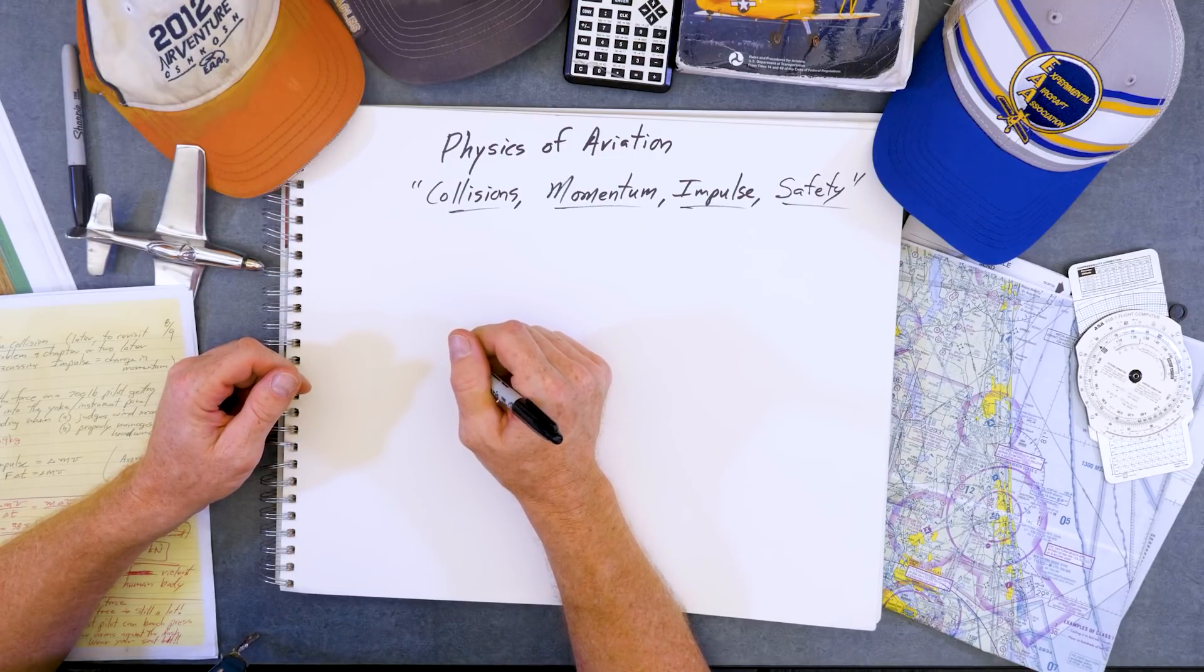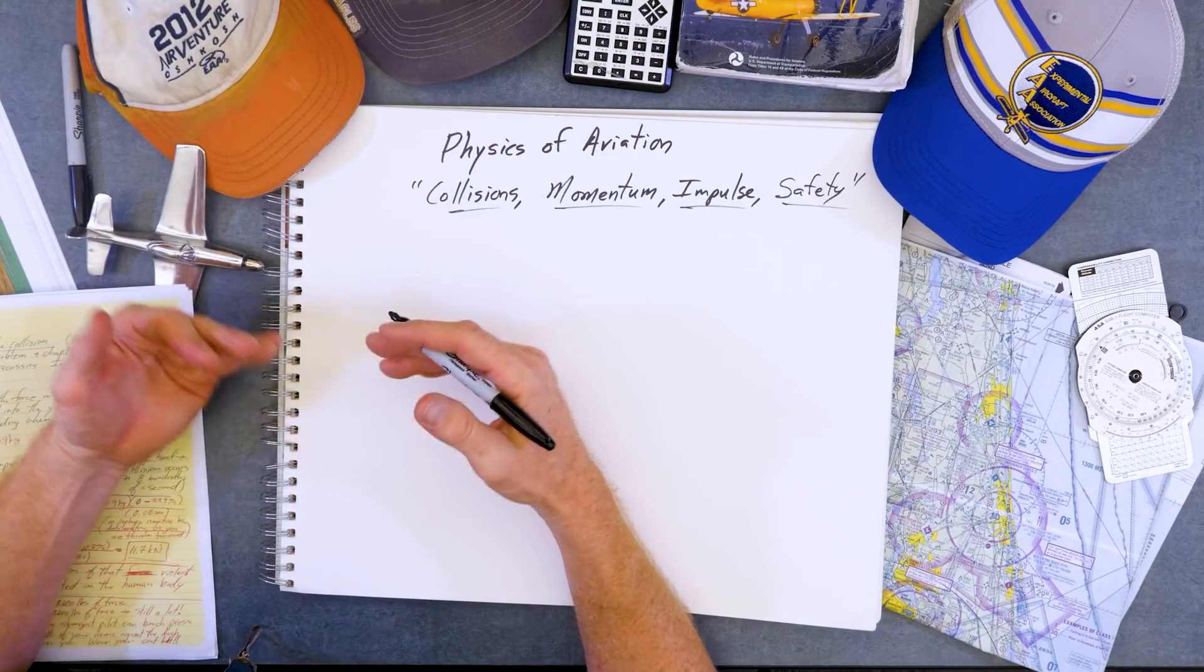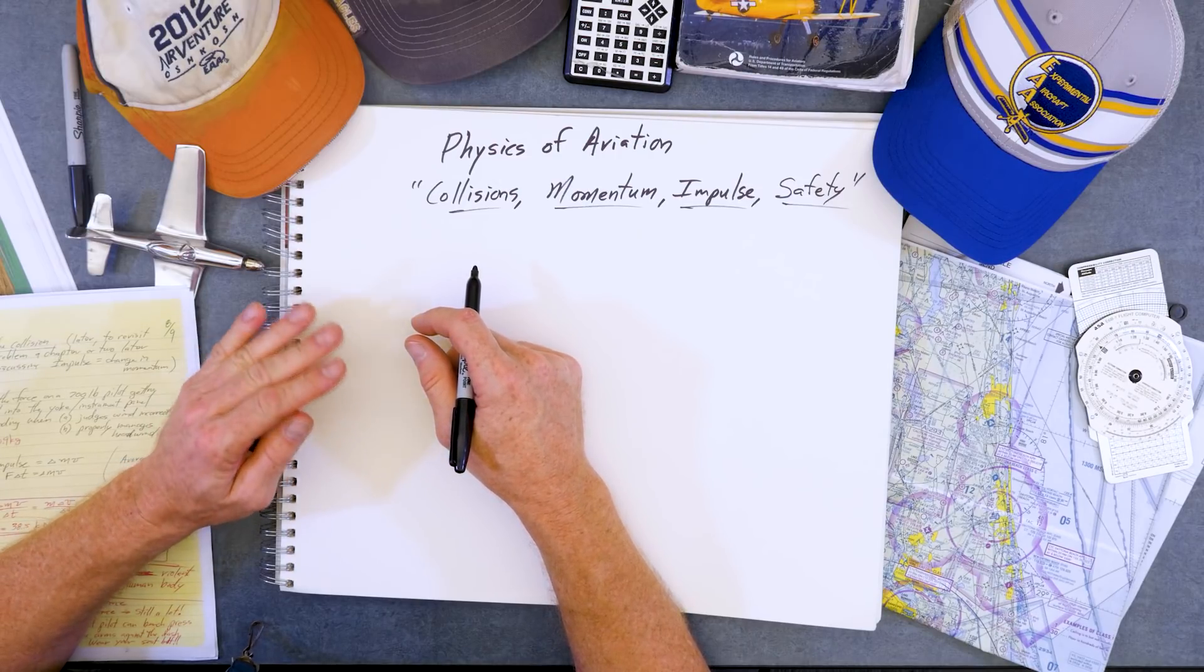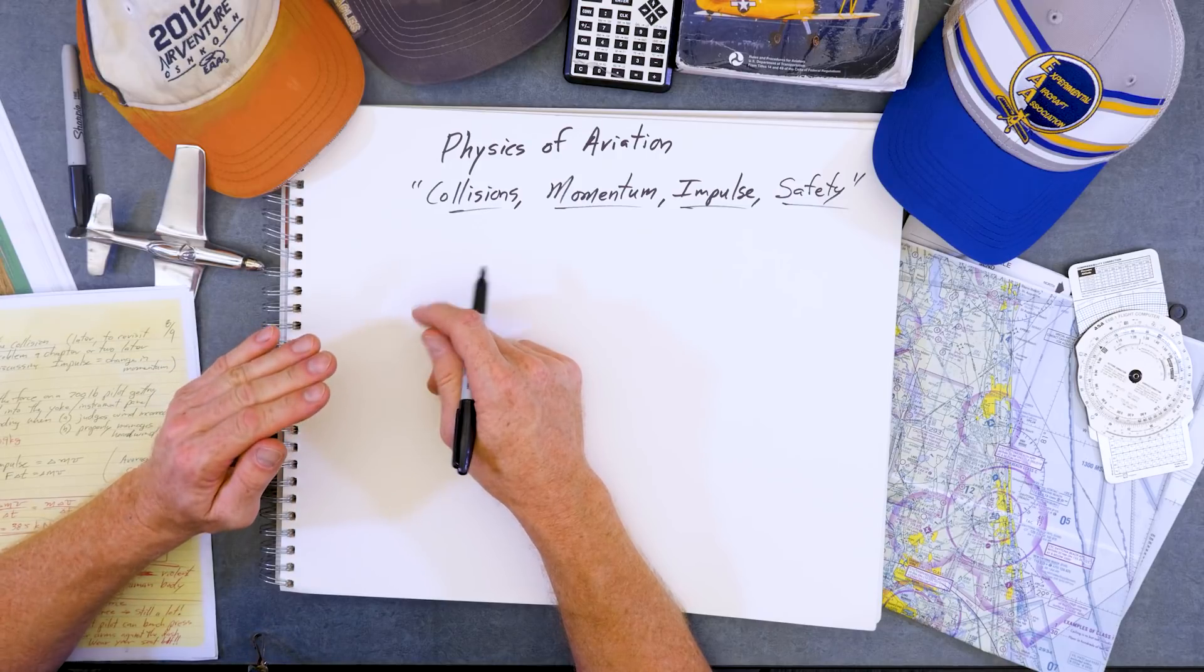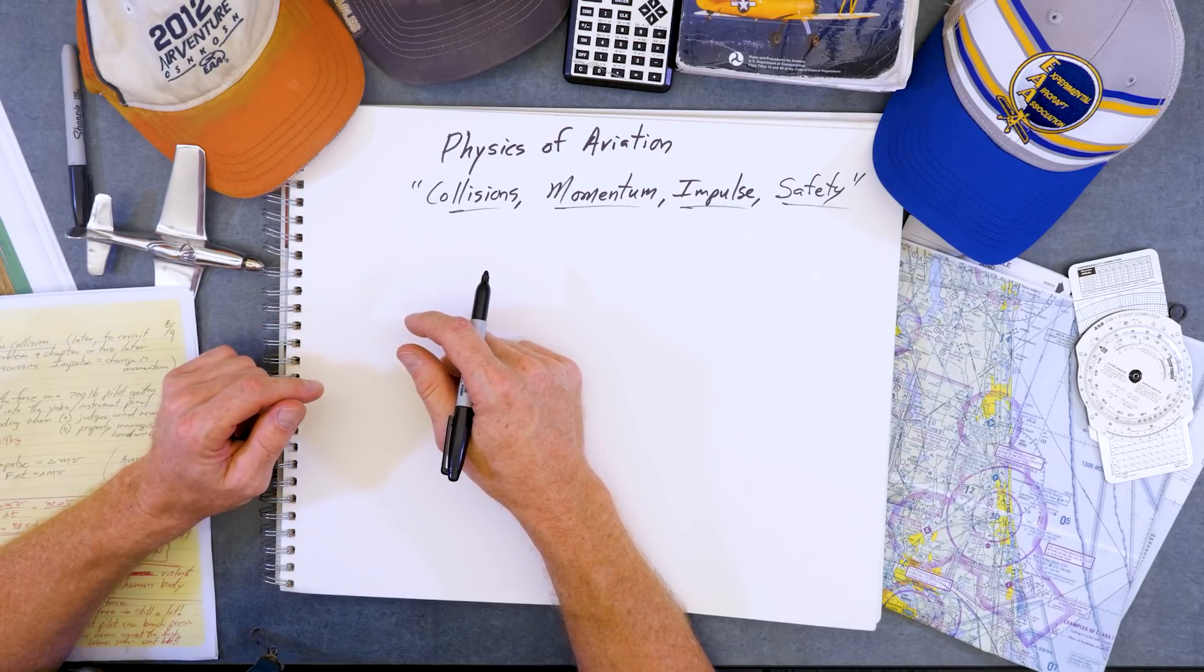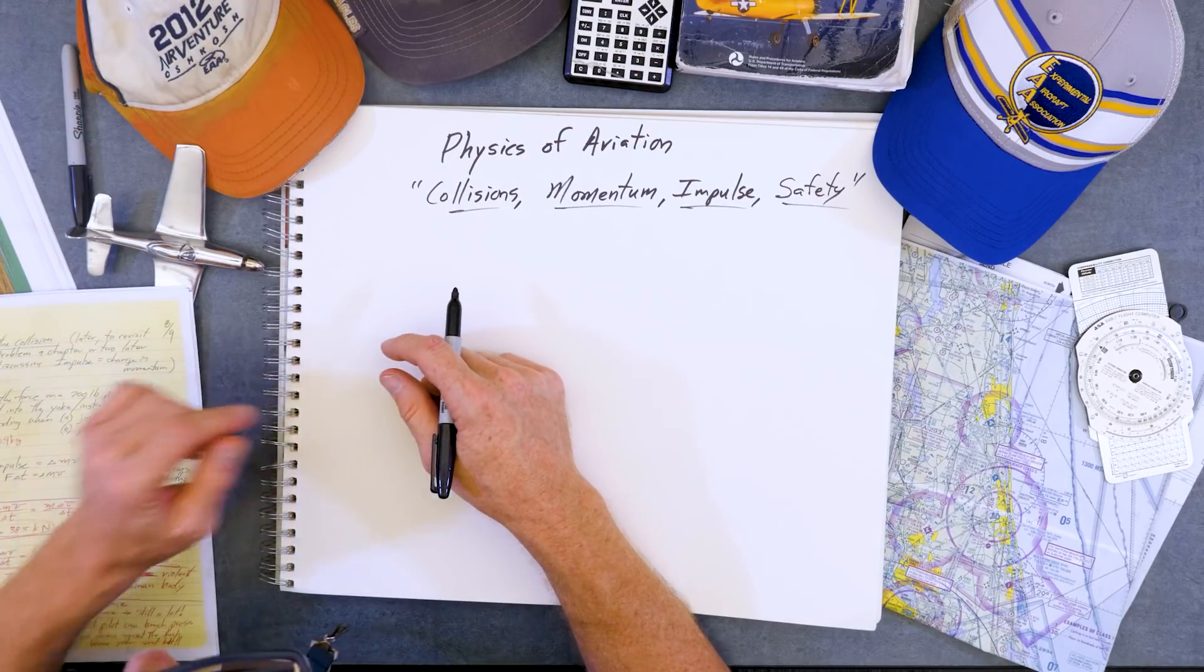Last time we left off by having an engine failure, managing our kinetic and potential energy, staying at best glide speed while we dissipated all that energy, finding our field, landing properly with the minimum controllable airspeed, getting that kinetic energy down as low as possible.